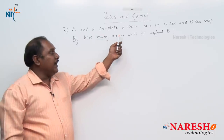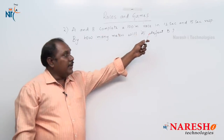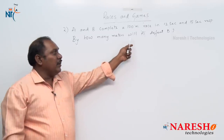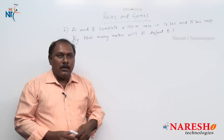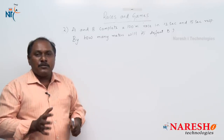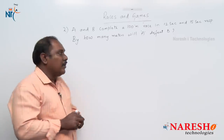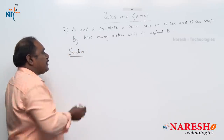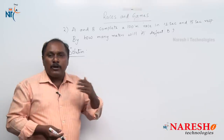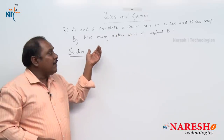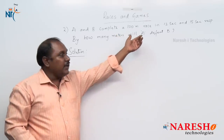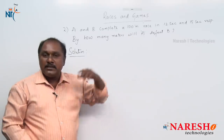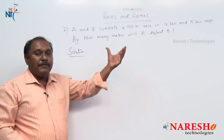A and B complete a 100 meter race in 12 seconds and 15 seconds respectively. By how many meters will A defeat B? Here also we have to assume that A and B are running at constant speed. Who is the person who took less time to complete the race? Obviously A. A completed the 100 meter race in 12 seconds, but B completed the same 100 meter race in 15 seconds. So definitely A defeated B.